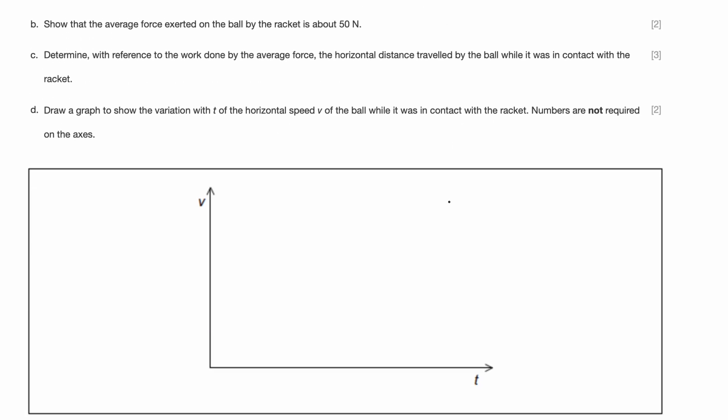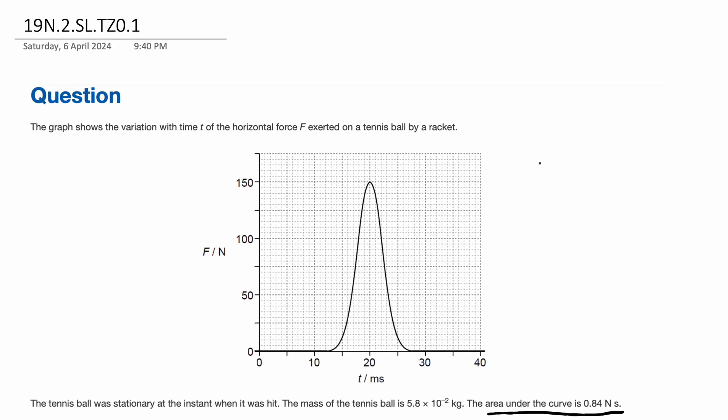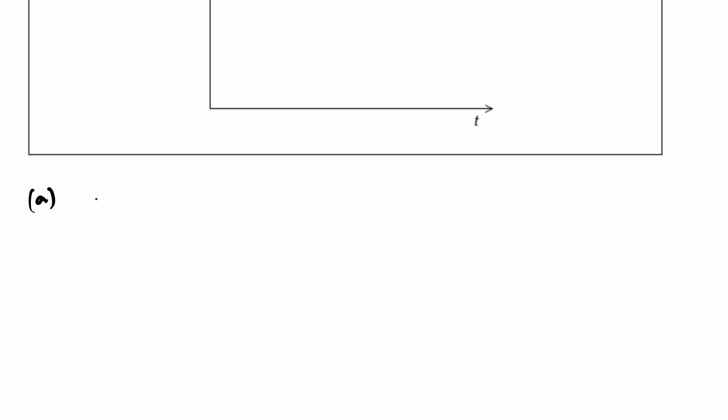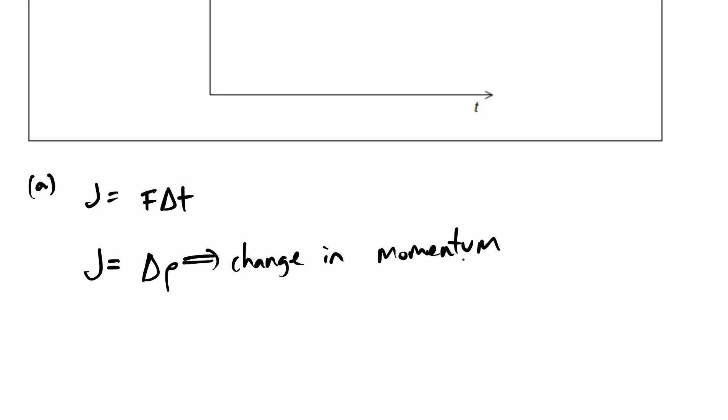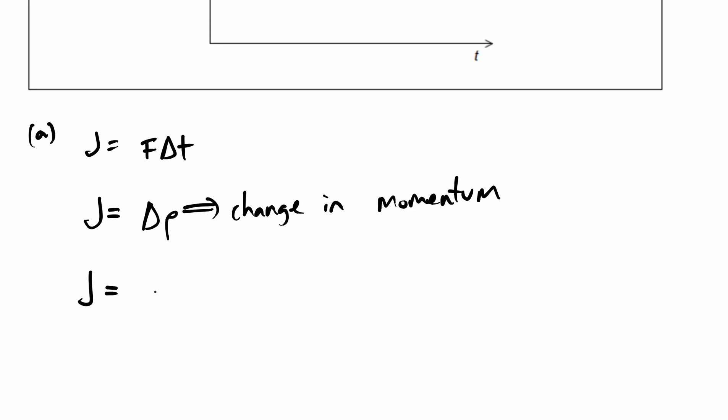How do I use impulse to solve this question? J impulse is actually force into the change in time, which is what is given in your data booklet. But what it also is, J is also the change in momentum. This is important because you are given the formula for momentum. We can say J is equal to mass into velocity final, which is the formula for momentum, minus mass into velocity initial.